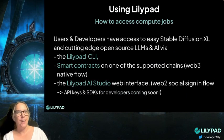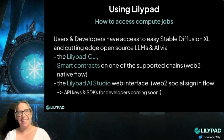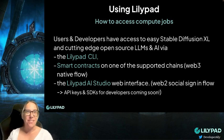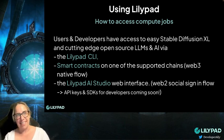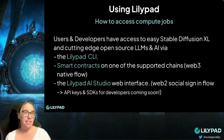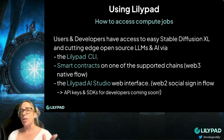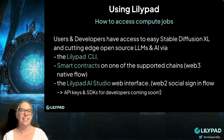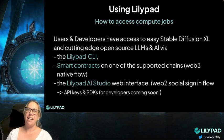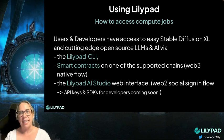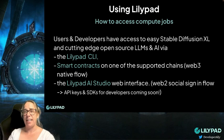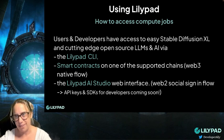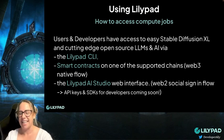So how do you use it? There are three ways you can use Lilypad: you can use it from the Lilypad CLI, you can use it from Smart Contracts, or you can use it from the brand new, recently released Lilypad AI Studio, which is a complete web interface flow. You don't need to know any coding to be able to use that.